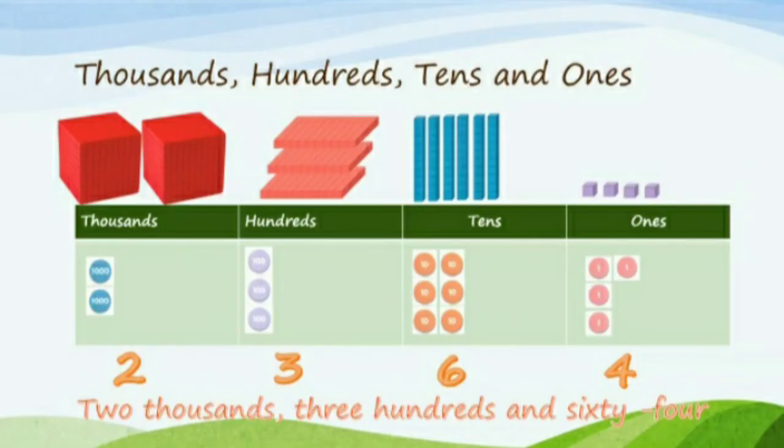Well students, we have some numbers here. It is 2, 3, 6, and 4. Or we call it as 2364. 2 is for 1,000, 3 is for 100, 6 is for 10, and 4 is for 1.